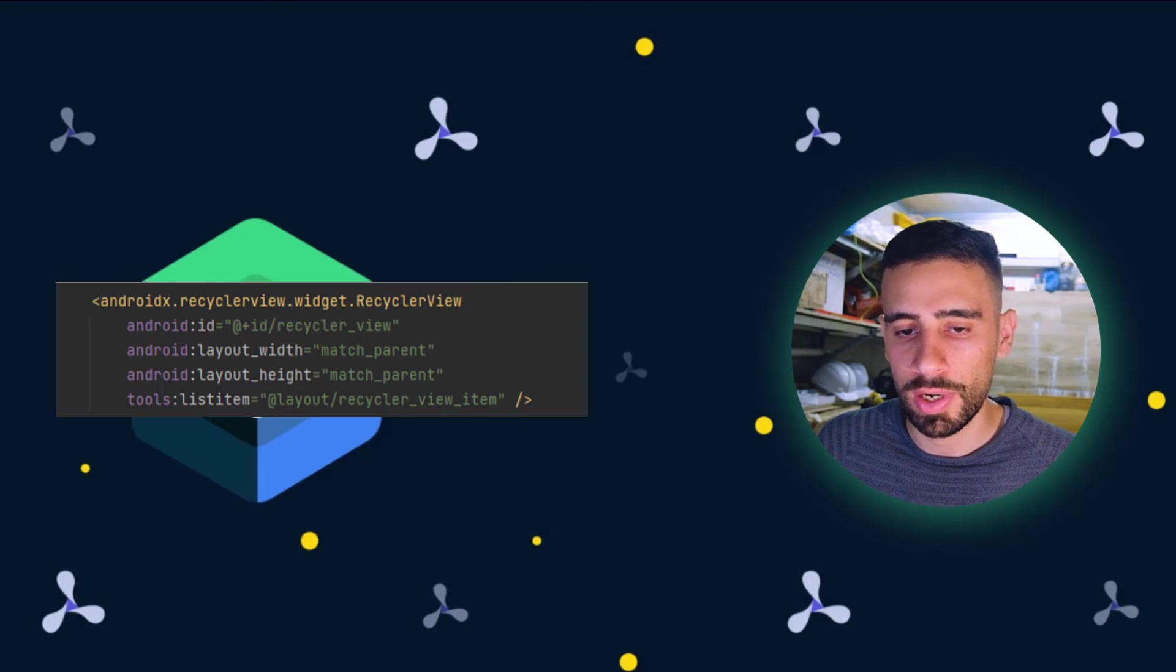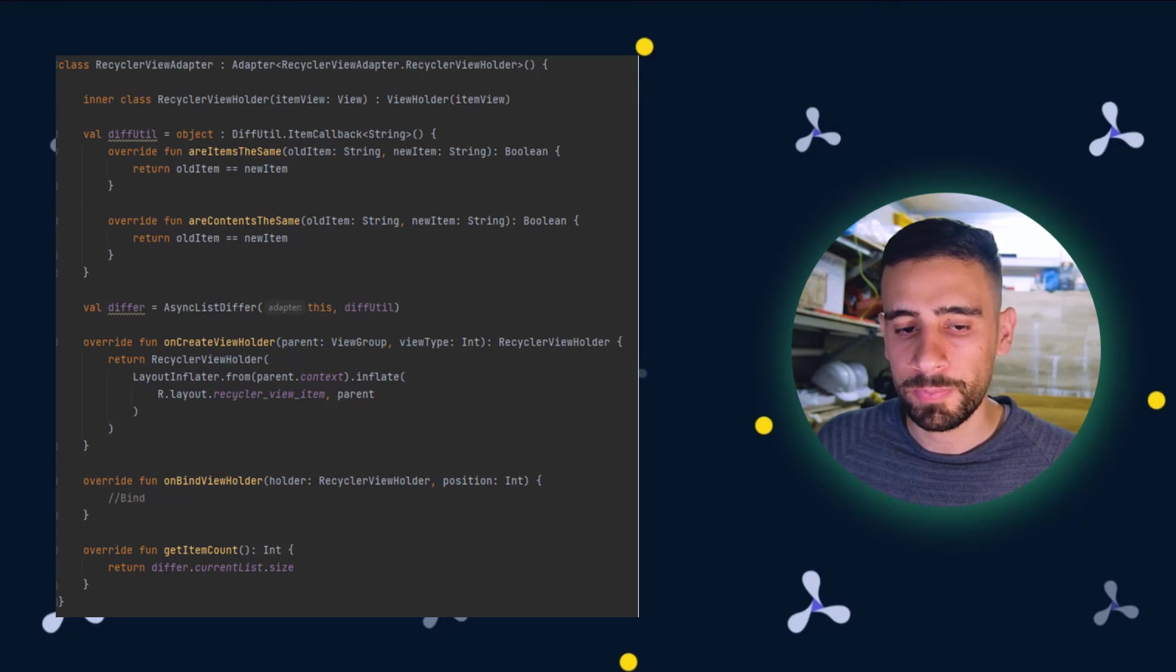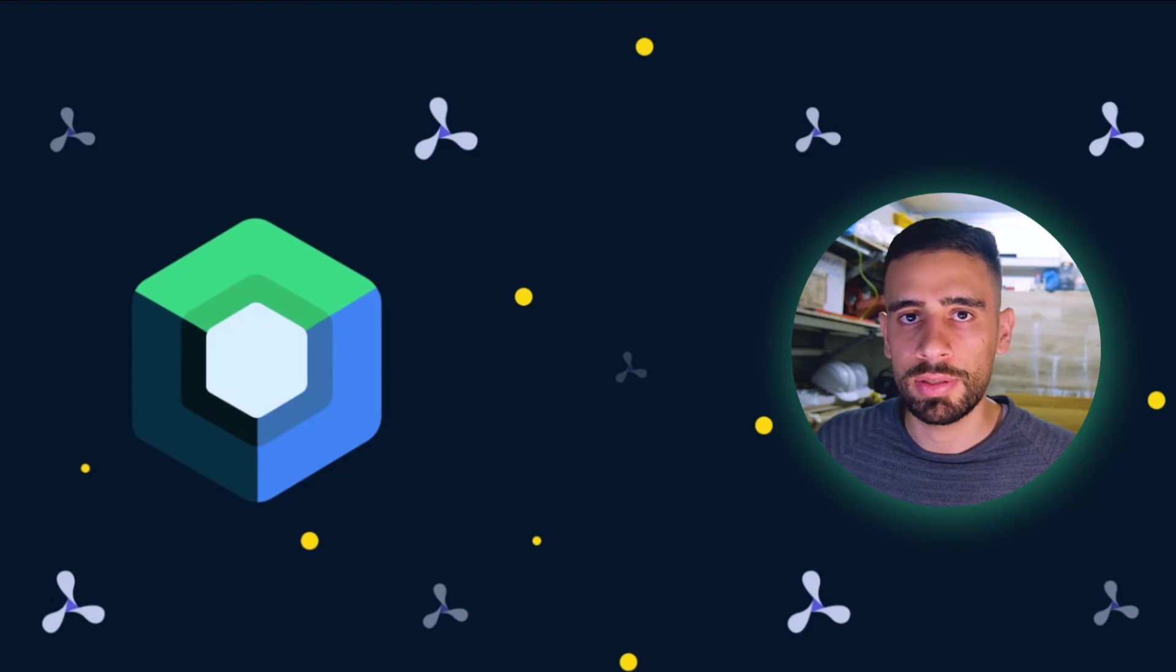So that actually took five lines of code. Then I defined the RecyclerView item, the design of that, which also took five lines. Then I created the adapter which actually took like 16 lines. So if we add that up we'll get 26 lines of code.